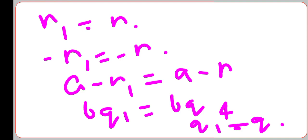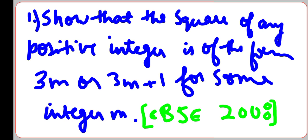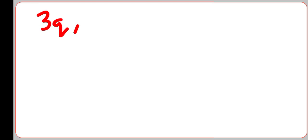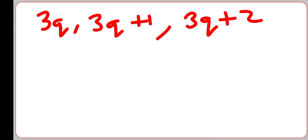Now we will solve an example. Show that the square of any positive integer is of the form 3M or 3M + 1 for some integer M. This question appeared in CBSE 2008 board exam for Class 10th. Let A be any positive integer; then A can be of the form 3Q, 3Q + 1, or 3Q + 2. We will take different cases.